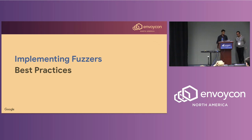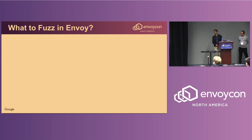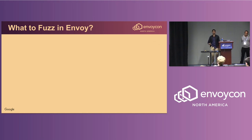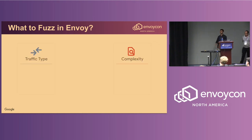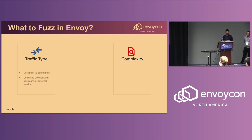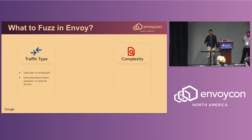These are best practices specific to Envoy that we've learned from three years of writing fuzzers. One key point is that we're not trying to fuzz every single target in Envoy proxy — adding a new fuzz test has computational cost and maintenance burden. Instead, we prioritize targets based on two main attributes: traffic type and complexity. Traffic type is essentially asking what type of actor your code is exposed to. If your library is completely on the config path, it's probably lower priority because we trust our configs and the XDS server.